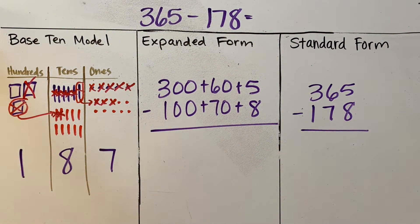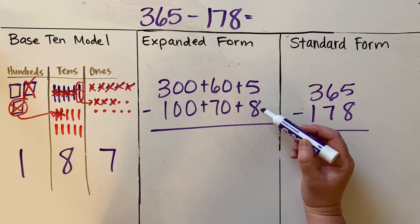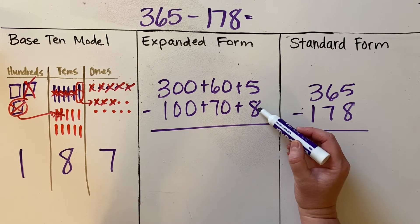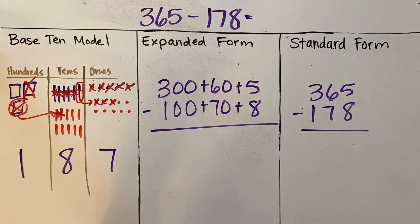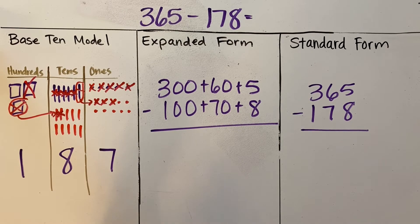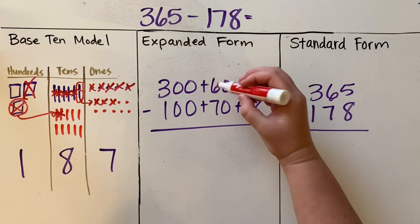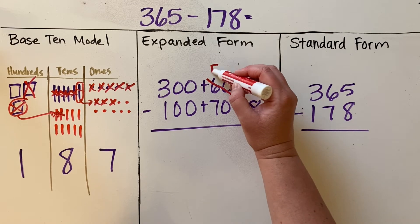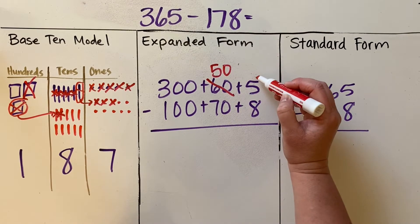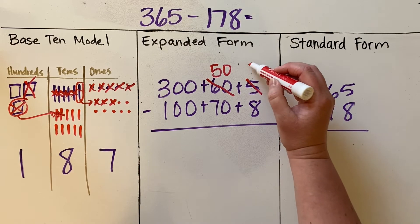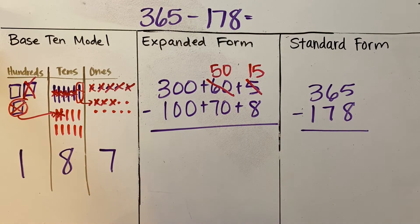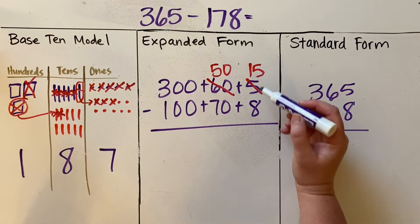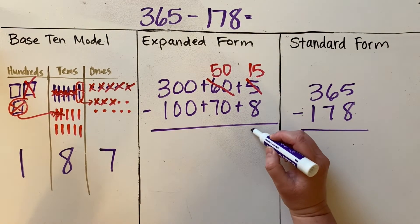We're going to show that decomposing and regrouping over the expanded form. Five minus eight—I can't do that. Eight is a bigger number than five, and so I can't subtract eight from five. What I need to do is decompose a 10. I'm going to take a 10 away from 60 and make it 50, and then give that 10 over to the ones place to make it 15. So now I can do 15 minus 8, and that equals 7.